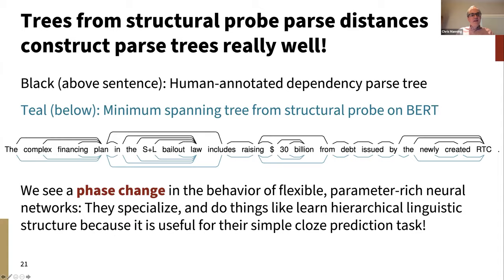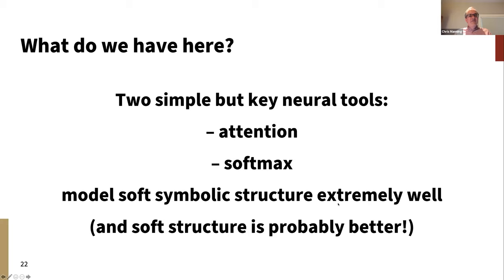What we really have are two very simple but key neural tools: attention and using soft maxes, which gives you a kind of soft categoricalization. Between them, they seem to model soft symbolic structure in neural models extremely well. Ultimately, soft structure is actually probably even the preferred thing, because everything from our natural language grammars to our lives is a bit squishy. I've been very interested in modeling structures such that you can have emergent near-symbolic structure, using that very successfully for both natural language understanding and reasoning.